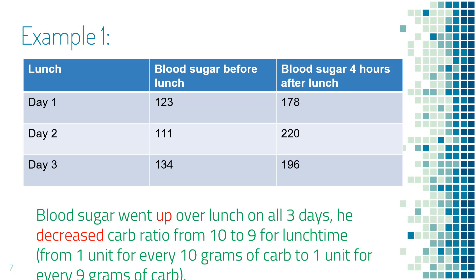He checked blood sugar again four hours after lunch and repeated this for three days. On day one, blood sugar went up from 123 to 178. On day two, it went up from 111 to 122. On day three, it went up from 134 to 196. Since blood sugar rose over lunch on all three days, he needs more insulin for lunch and reduced carb ratio from 10 to 9 — about 10 percent more insulin for the same amount of carb.